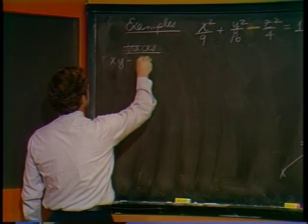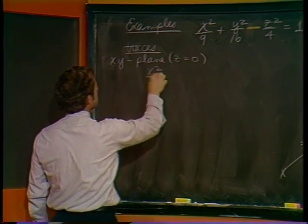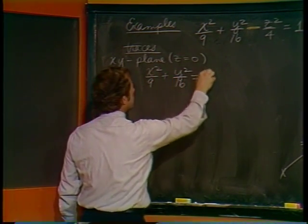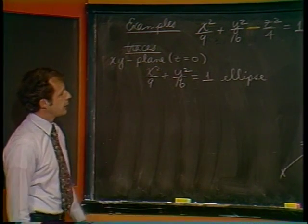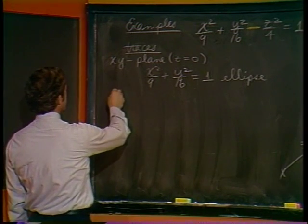xy-plane, z equals 0. We've got, well, actually we've got the same thing - we still have an ellipse. It's the same ellipse that we have there already. I hope something changes. It will, of course.